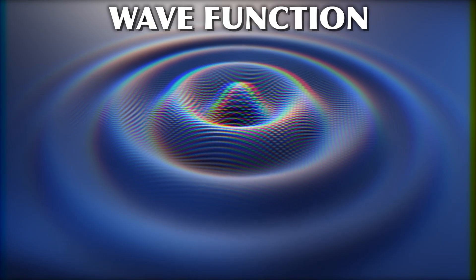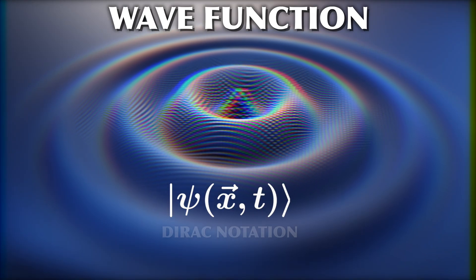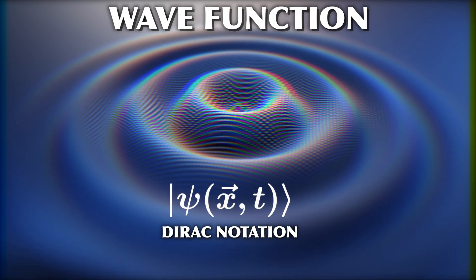Quantum mechanical systems are described by their wave function or state vector, written like this for a single particle. This is the Dirac notation, basically a different notation for a vector. And we call this a ket.